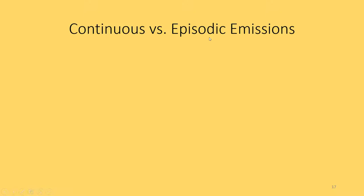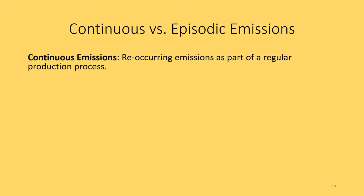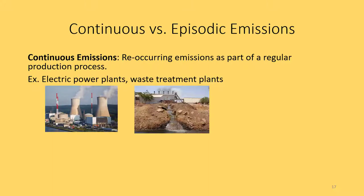The last set of definitions: continuous versus episodic emissions. A continuous emission is a reoccurring emission as part of a regular production process. You can think of continuous emissions as those from electric power plants or waste treatment plants — emissions that come out every day as part of our normal way of life. The exhaust that comes out of vehicles as you drive them around daily is another example of a continuous emission.